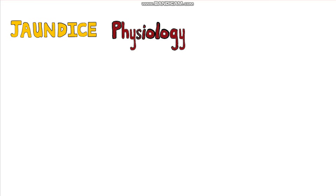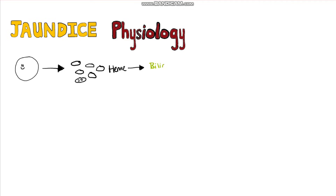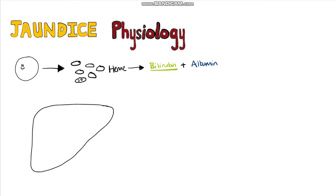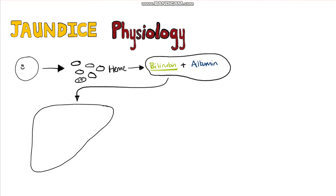We need to know a little bit about bilirubin itself. Bilirubin is a breakdown product of heme and is released from red blood cells when they are destroyed. Bilirubin needs to get to the liver in order to be metabolised and excreted, and it does so by initially being bound by albumin and then being transported to the liver via the blood.